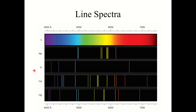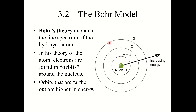Last thing in this section: line spectra. These are emission spectra given off by elements. If you take hydrogen and heat it up, you get an emission spectrum where hydrogen emits 4 lines at precise wavelengths. Sodium emits 7 lines at specific discrete wavelengths. Calcium and mercury have their own emission spectra. They all emit individual discrete lines — not a continuous range like a black body — and we will learn why in Section 3.2. That concludes Section 3.1.